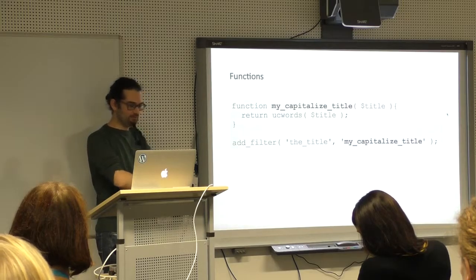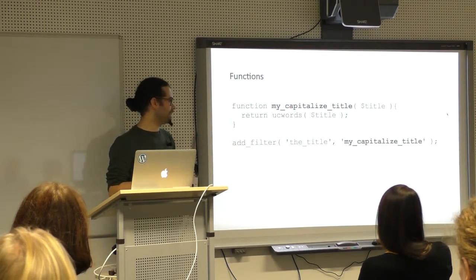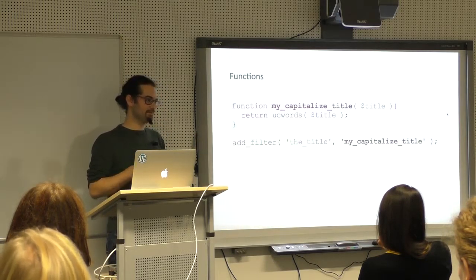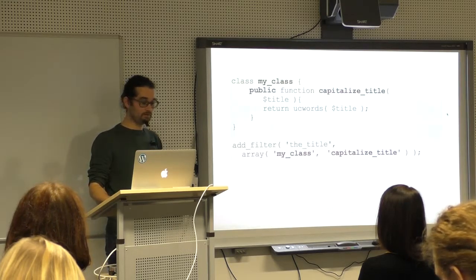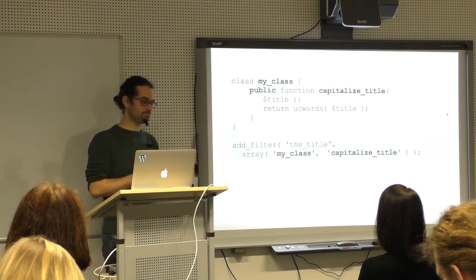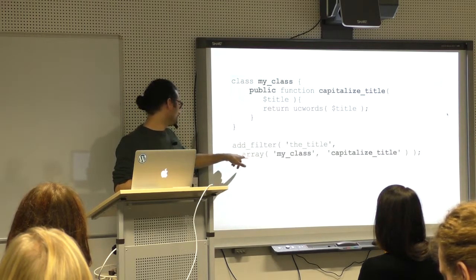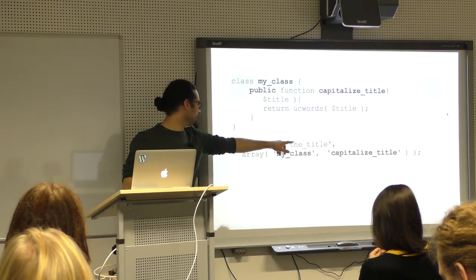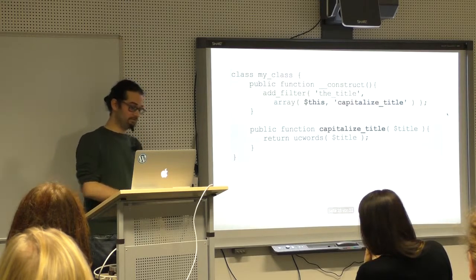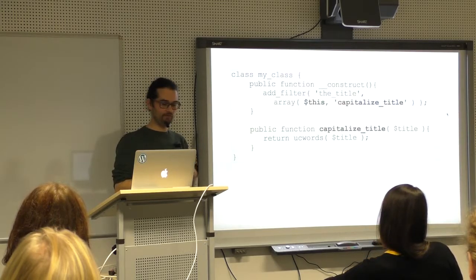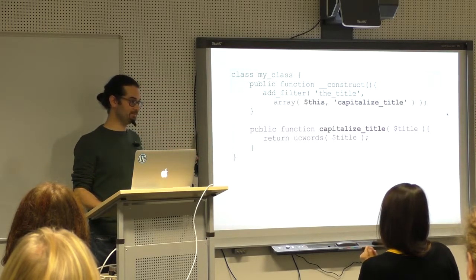When defining your callback function, my first advice is to prefix it. 'My_' is common in forums, but you should use something like your real name so people understand who wrote this function and it doesn't collide with existing functions elsewhere. You can also put your functions into a class — then you have the prefix in the class name and call it with the class and function name in an array with add_filter() or add_action(). If you're adding the filter or action within the class itself, you can use 'this' instead of the class name.